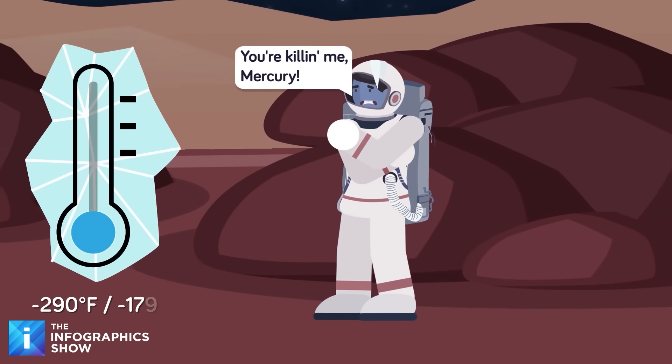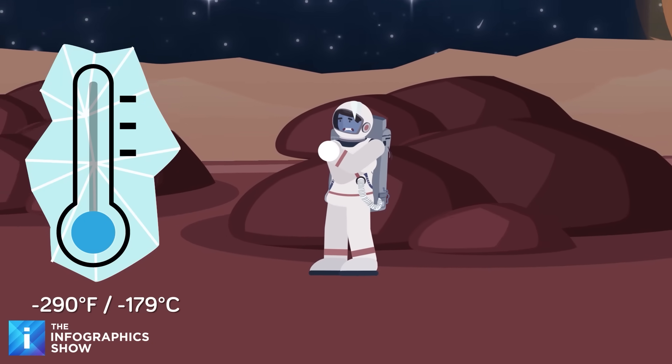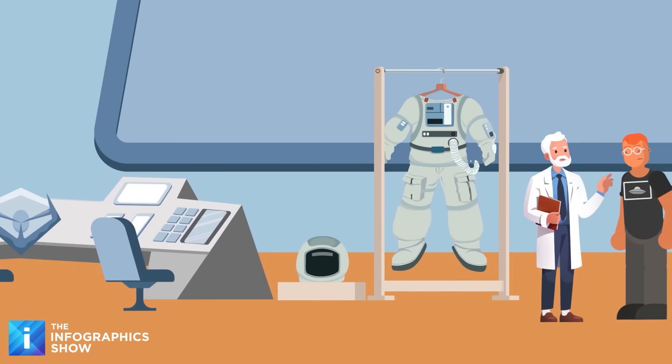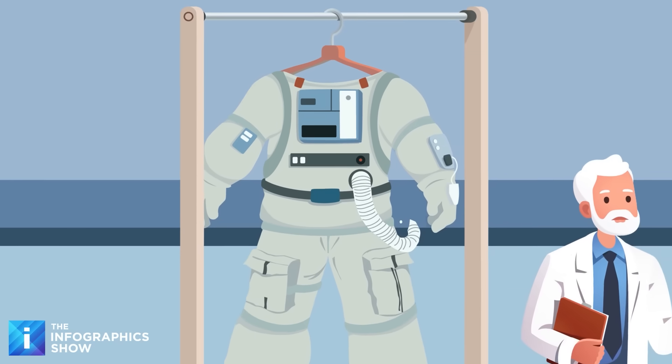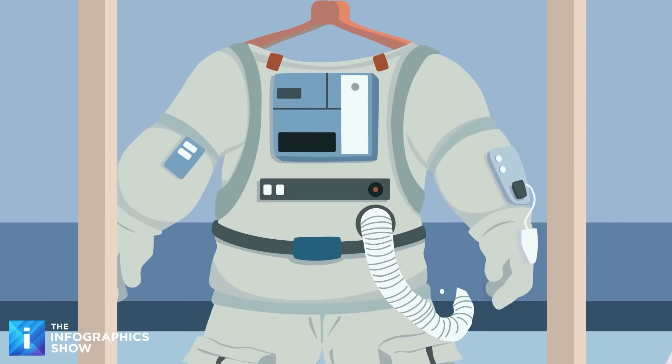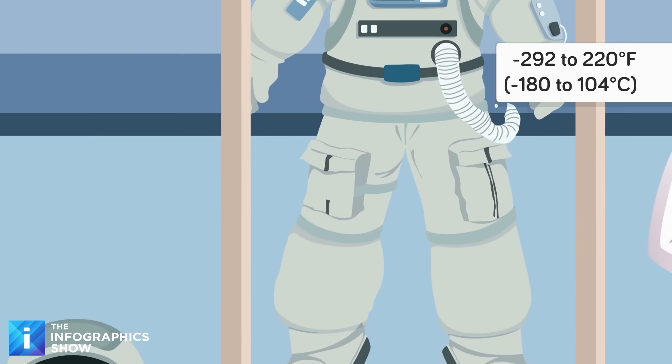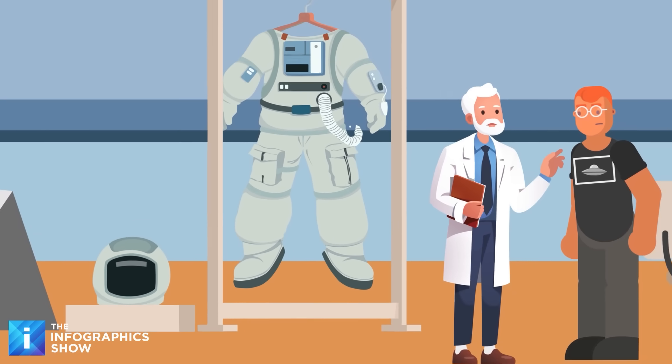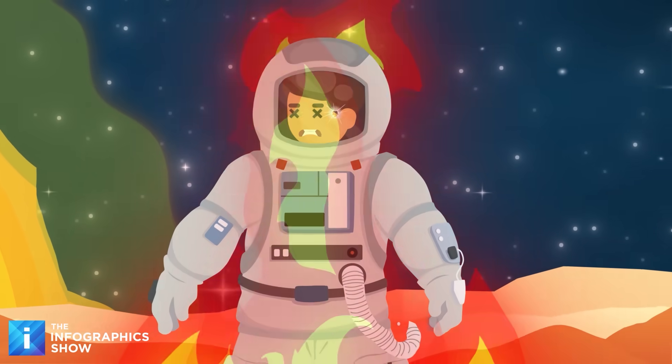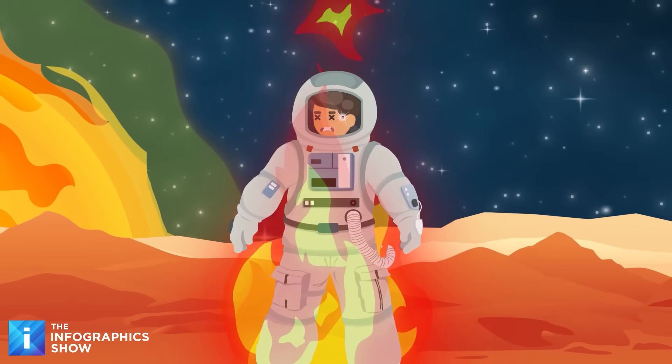Temperatures there drop to negative 290 degrees Fahrenheit at midnight. NASA's latest spacesuit, the Exploration Extra-Vehicular Mobility Unit or XEMU, is designed to withstand temperature extremes ranging from negative 292 to 220 degrees Fahrenheit. Not quite enough to withstand Mercury's extremes, so even if you'd managed to survive the freezing conditions in the XEMU, you would be fried the moment the planet rotated.